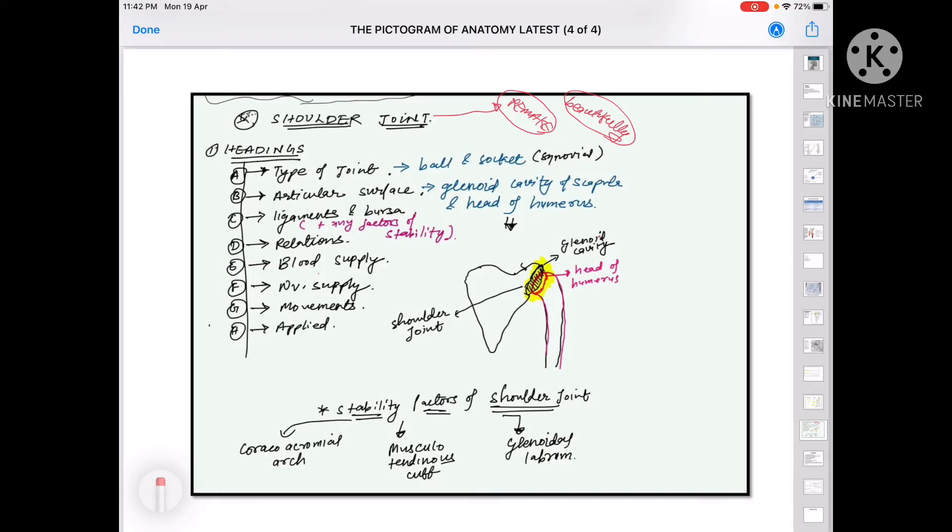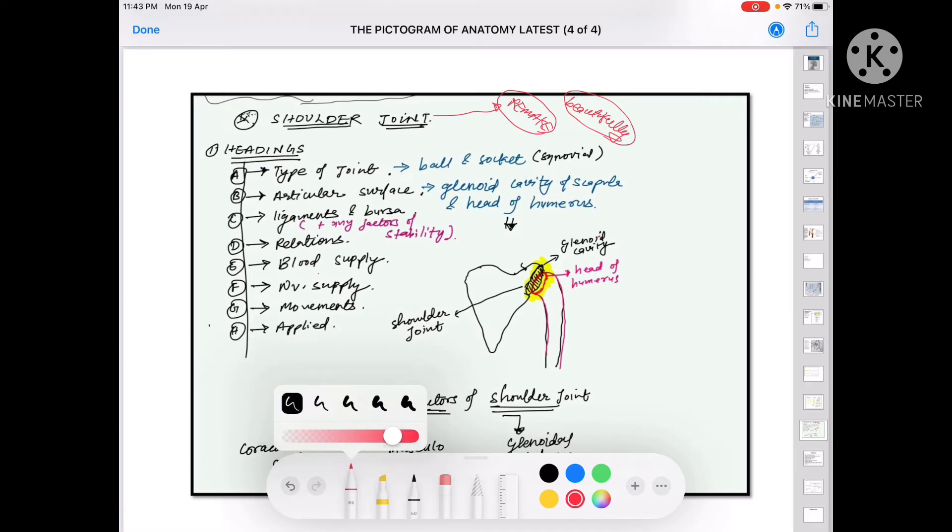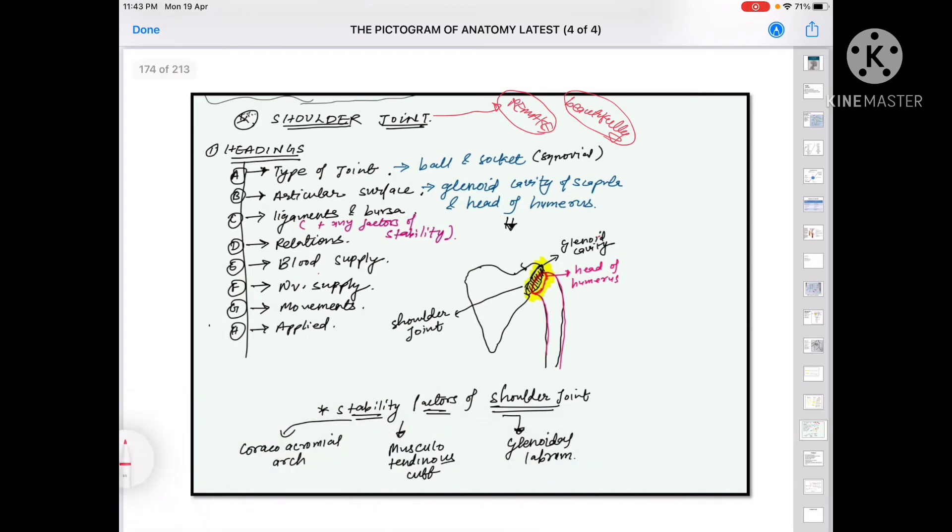Let us discuss today a very important topic of upper limb, that is shoulder joint. In anatomy, when you will read all the four parts - upper limb, lower limb, head and neck, abdomen and pelvis - you have to learn about four types of joints: shoulder joint, hip joint, knee joint, and ankle joint, and one most important from the head and neck section, that is the temporomandibular joint.